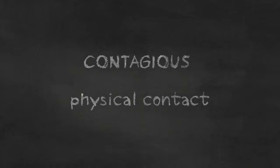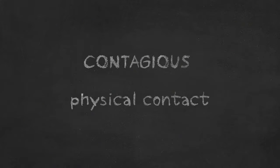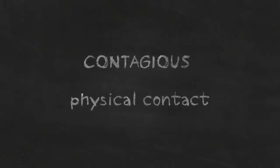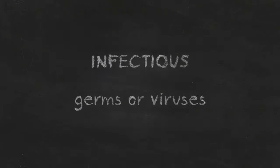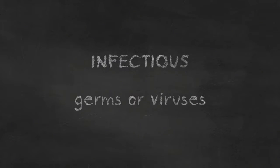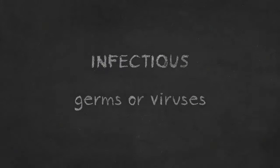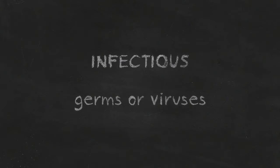A contagious disease is transmitted by physical contact with a sick person or animal, while an infectious disease is contracted with germs or viruses spread in the air or water.